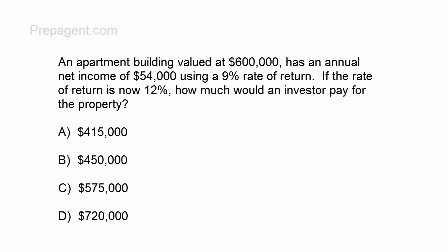An apartment building valued at $600,000 has an annual net income of $54,000 using a 9% rate of return. If the rate of return is now 12%, how much would an investor pay for the property?